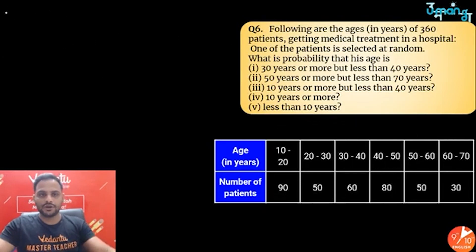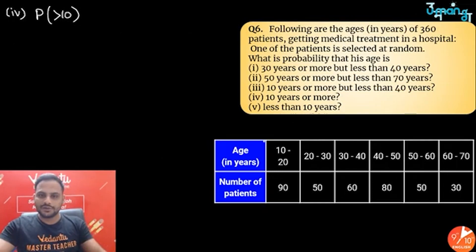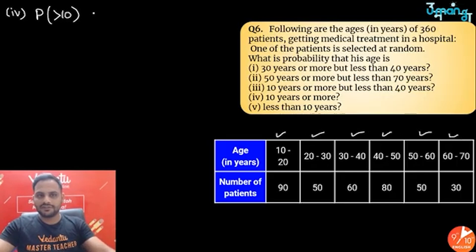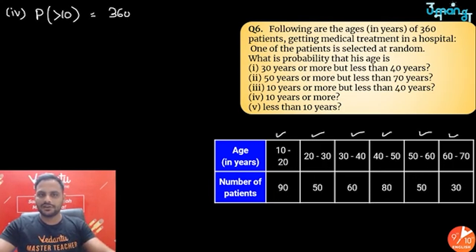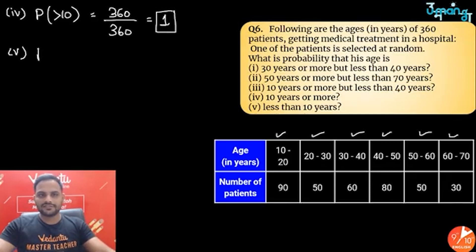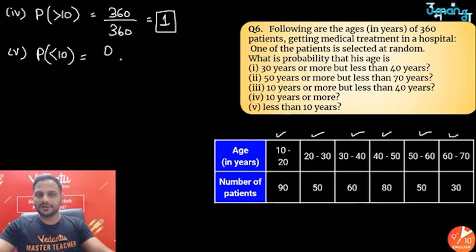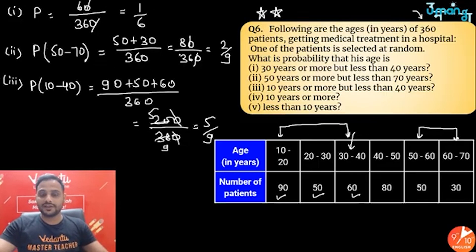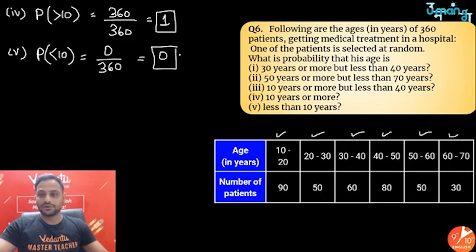Case 4: probability that the patient is aged 10 years or more — every group satisfies this condition, so adding all: 90 + 50 + 60 + 80 + 50 + 30 = 360. Probability = 360/360 = 1. Case 5: probability that the patient is less than 10 years — there is no group in this data for age less than 10, so 0 favorable outcomes. Probability = 0/360 = 0.